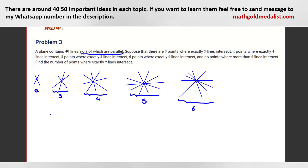If we consider the lines, how many pairs of lines are there? We have 40 lines, so how many pairs? You choose two out of 40, so it is 40 choose 2.